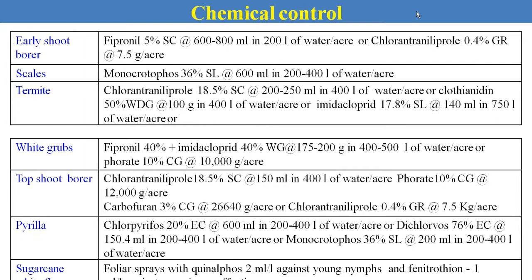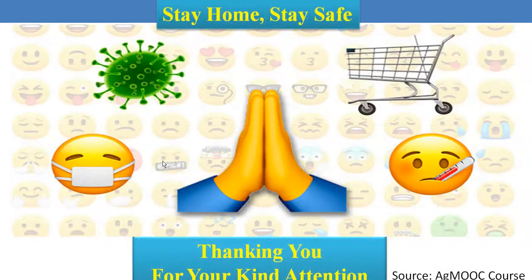These are some of the recommended chemicals recommended by CIB&RC — the Central Insecticide Board and Registration Committee. All these insecticides are available in the market with different trade names. You can use these chemicals with the recommended dose at regular intervals to reduce or control the insect pest population in sugarcane. This is all about the study of the insect pest population and their management in case of sugarcane. Thank you.